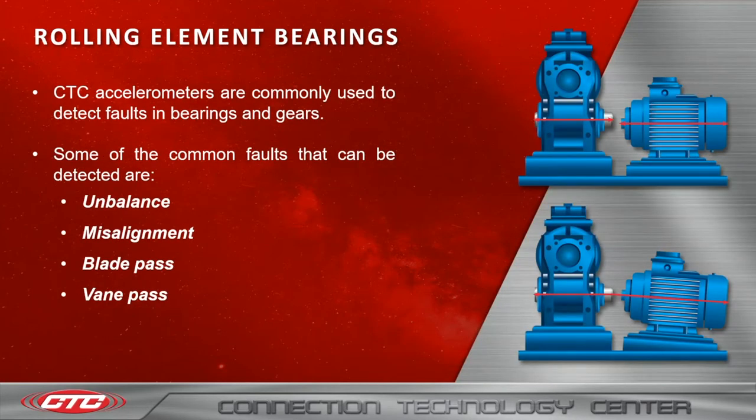Moving into rolling element bearings, CTC accelerometers are commonly used to detect bearing faults and gear faults. Some of the common faults that can be detected are unbalance, misalignment, blade pass, and vane pass.